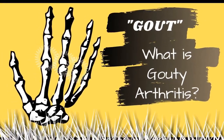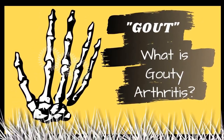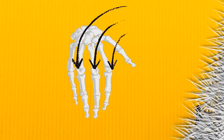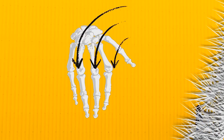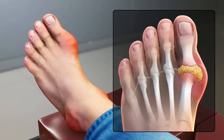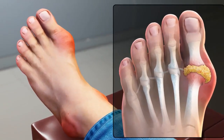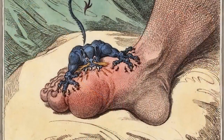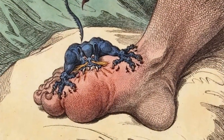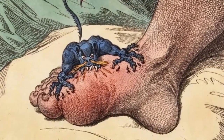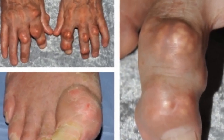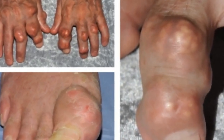Gout. What is gouty arthritis? Gout is caused by needle-like crystals of uric acid deposited on the joints. It causes inflammation and sudden pain in the affected area. Gouty arthritis can affect single joints, or in severe cases it can affect multiple joints, which are called polyarticular gout.